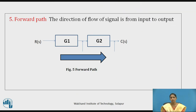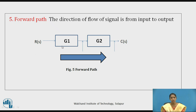Next is the forward path. The forward path is the direction of signal flow from input to output. R(s) is the input and C(s) is the output. The signal R(s) flows through block G1, then to G2, and then produces the output C(s). The signal flow from R(s) to C(s) is known as the forward path, as shown in figure 5.